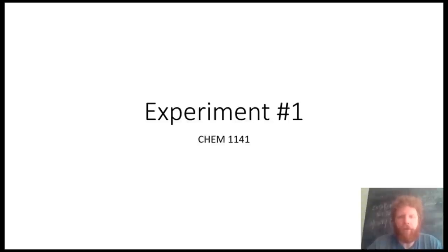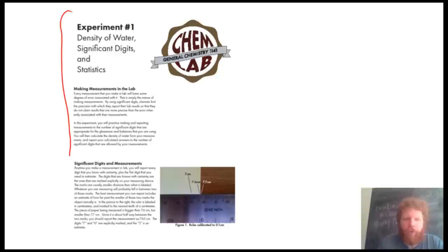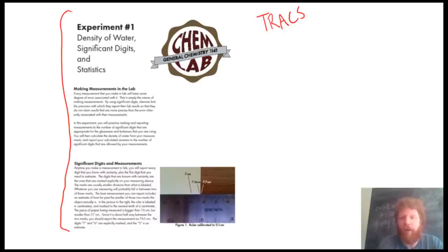Good afternoon everyone. I wanted to go ahead and talk to you about your first experiment in General Chemistry 1141. Over the next few slides I'm going to walk you through the worksheet that you need to print up and bring to your first lab meeting. What you see here is the first page for the worksheet that you will be doing in your first lab. This is available on Tracks under the Resources tab. This is the first experiment — it's an eight-page PDF. Go ahead and print up a copy and bring that to lab with you.